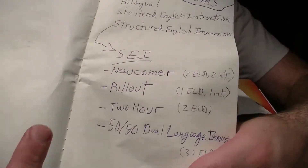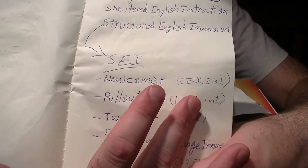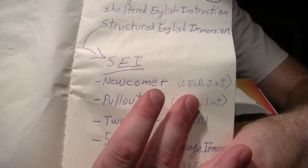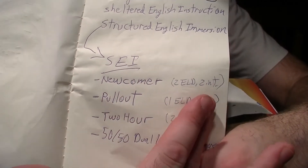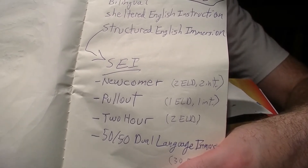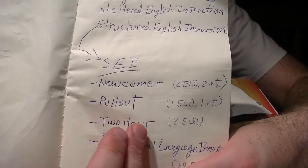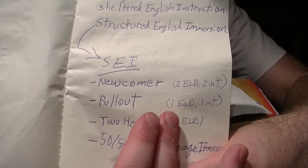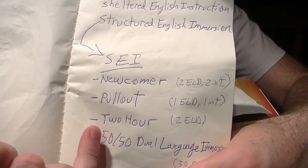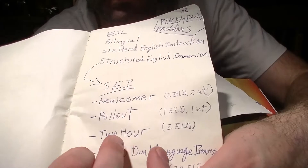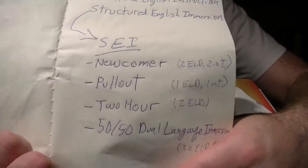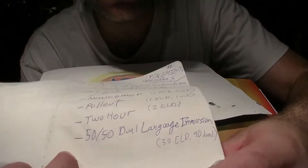We've got newcomers — that's the most intensive level. You get two hours of ELD (English Language Development), just focusing on learning the language, and then two hours of learning the language in an integrated way in content areas like social studies and science. Pull-out is similar but less extensive: one hour English language development, one hour integrated. The two-hour program gets two hours of ELD in their day. And 50-50 dual language gets 30 minutes of English language development and then 90 minutes in a bilingual classroom. So this is lots of options, seeing what works best for different students in different schools and communities, as opposed to everybody doing four hours of ESL education.